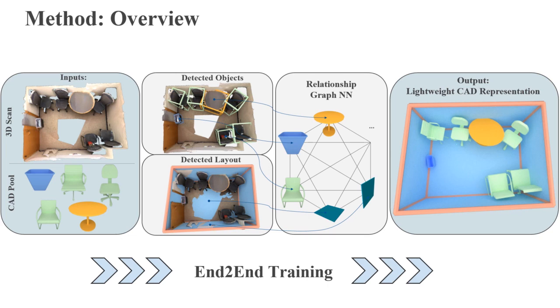The input to our method is a 3D scan and a set of CAD models. We first predict both layout components and objects in the scene. The detected elements are fed into a graph neural network to predict relationships with each other.